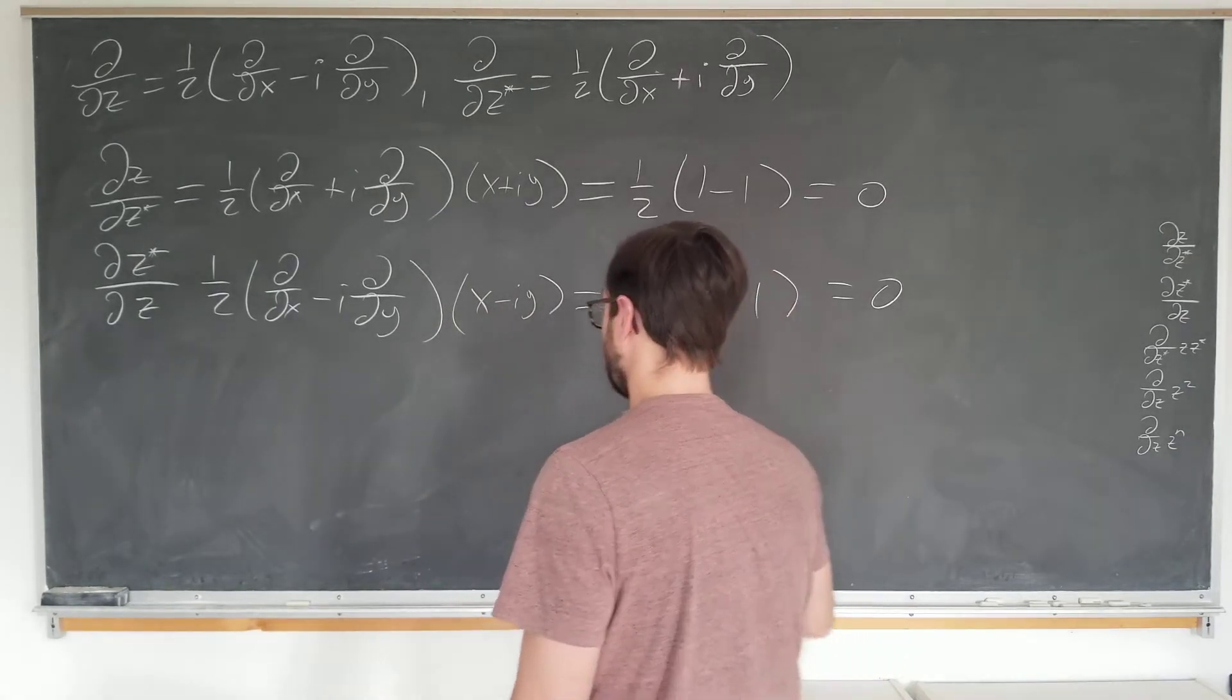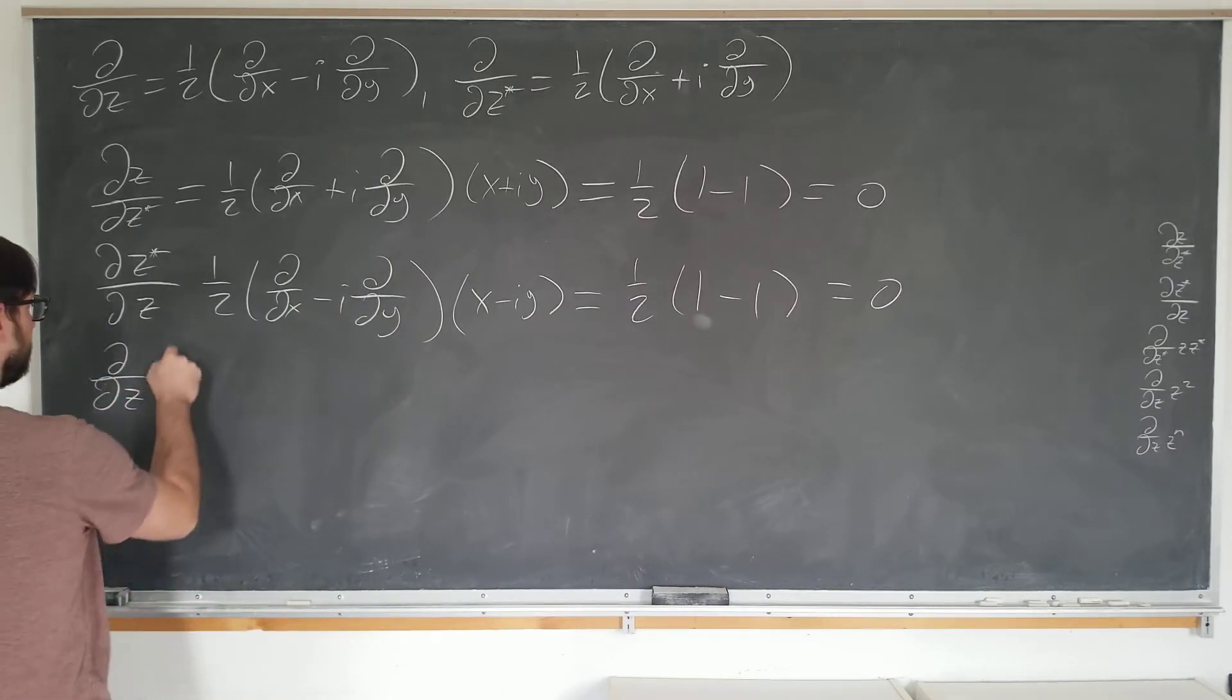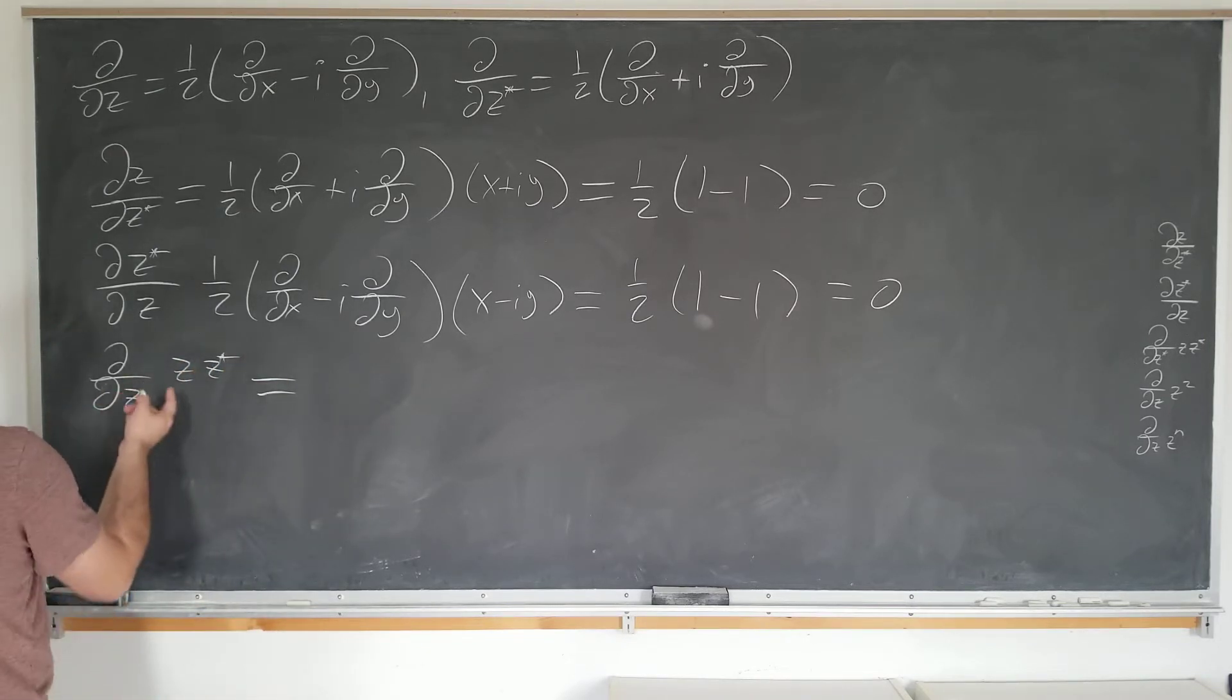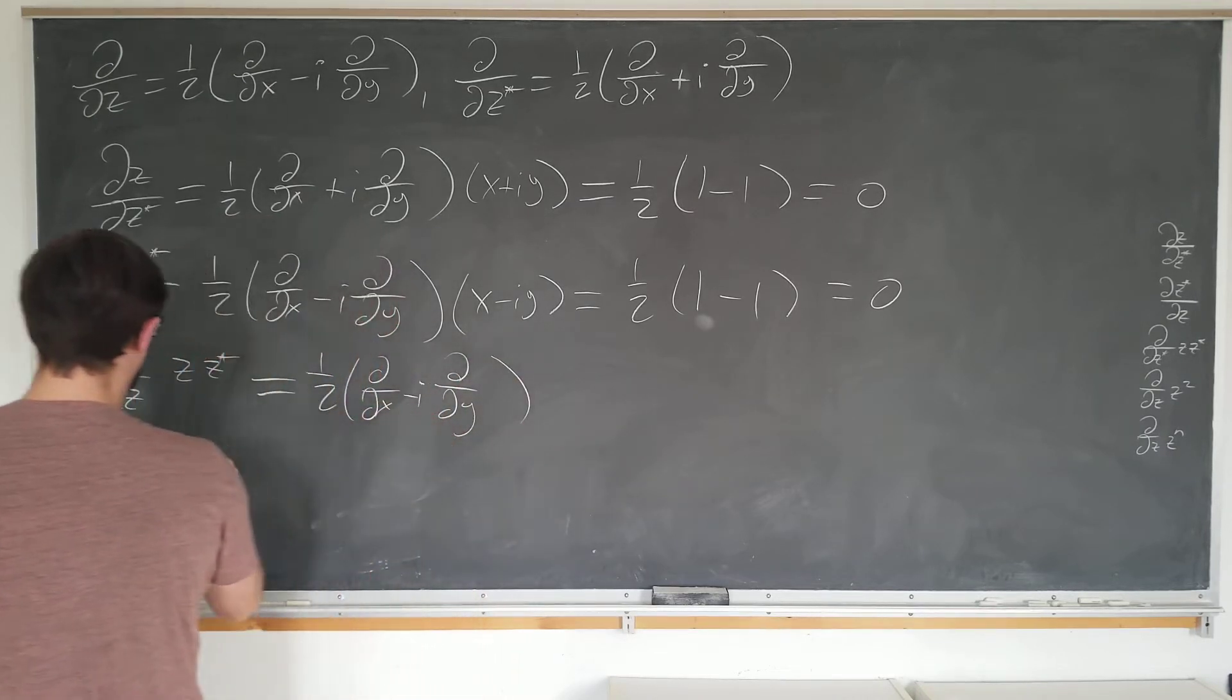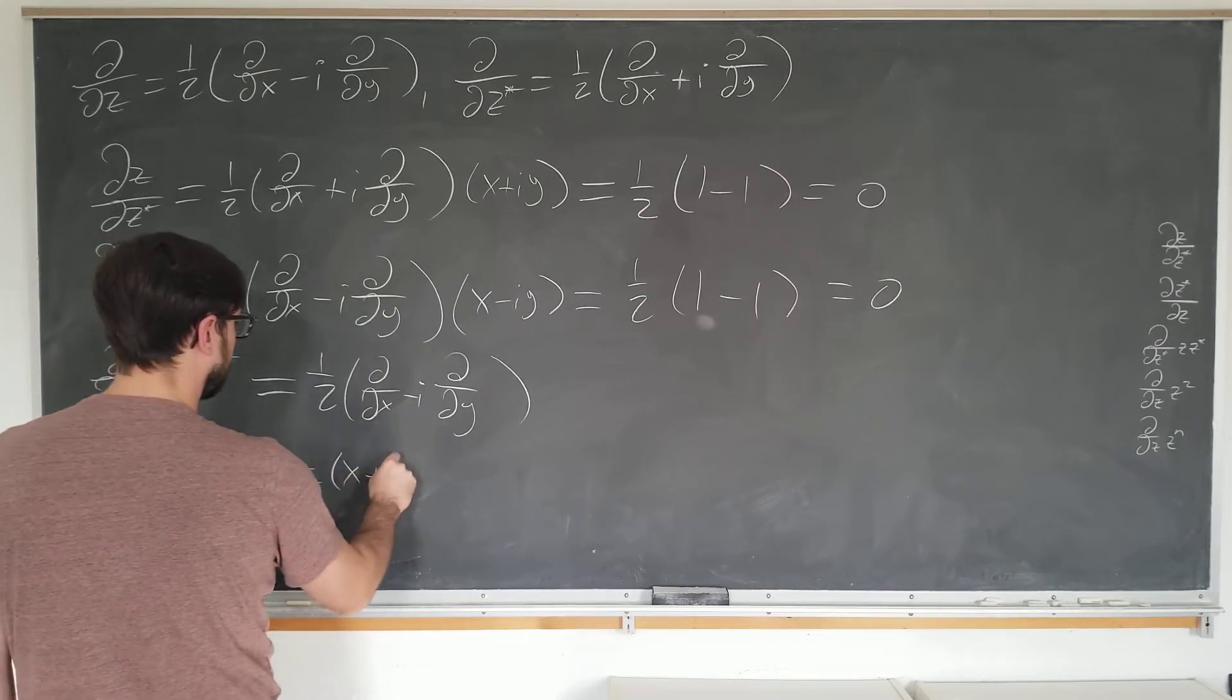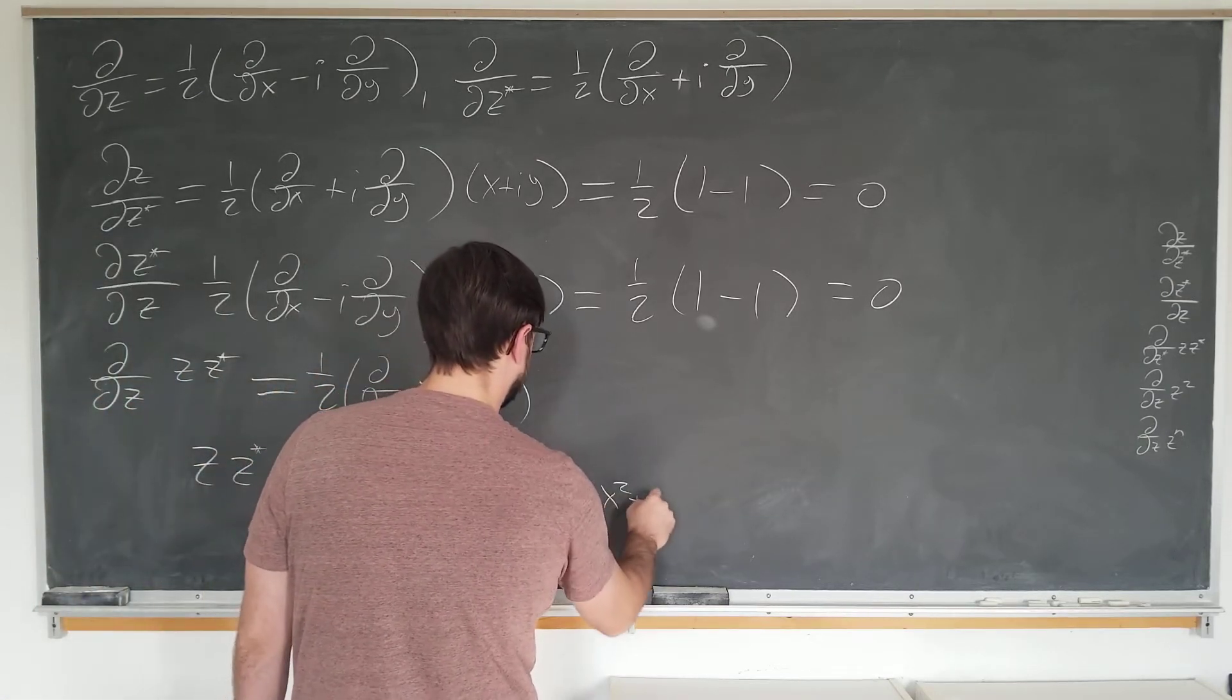And now we're going to evaluate a slightly trickier case. We're going to see how it works with d by dz of z z star. All right, so the first part is easy, the same operator as above. And for the next part, you should know the identity z z star is just equal to x plus i y times x minus i y, which if you foil this out is simply x squared plus y squared.